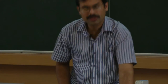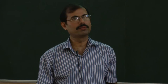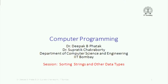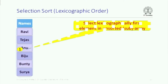This is an add-on to whatever we have studied. We have studied sorting integers, and now the question is: can we sort strings or other data types? Instead of integers, we have some strings like names of students, and we want to lexicographically sort them — that is, sort them in dictionary order. Any name starting with A should appear before any name starting with B. If two names start with B, we look at the next letter to determine their order. That is lexicographic sorting.